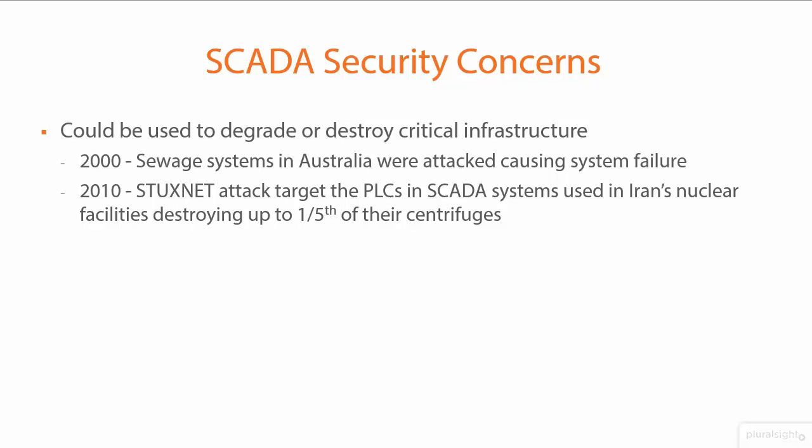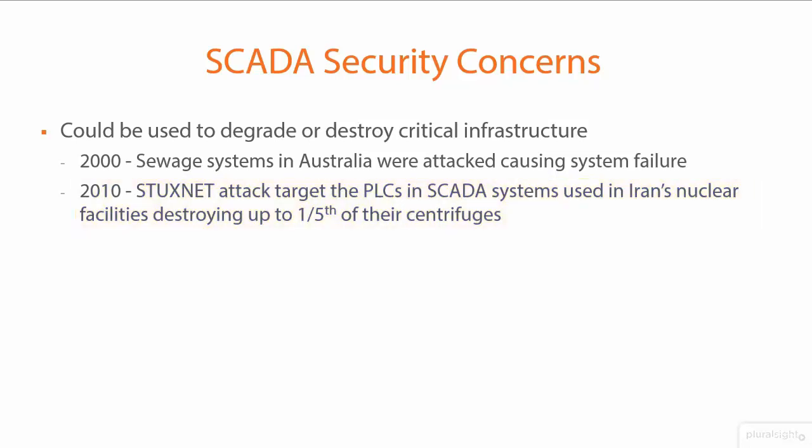These attacks can be used to degrade or destroy critical infrastructure. Two major examples: In 2000 in Australia, a sewage system was attacked by a disgruntled internal employee who effectively shut down the sewage system, causing it to back up throughout parks and many areas of Australia. In 2010, a much more determined and focused attack used code as a weapon — called Stuxnet — reportedly a sponsored, targeted attack attributed to the US and/or Israel, specifically targeting PLCs and SCADA systems used in Iran's nuclear facilities.